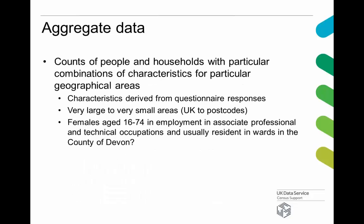We're talking about aggregate data. To give you a definition: that's counts of usually people and households with particular combinations of characteristics for particular geographical areas. All these characteristics come from questionnaire responses. The areas vary from very large — UK, country level — right down to the smallest areas. There's some data down to postcode level, which is just headcounts of males and females, but there's more detail at output area level as well.